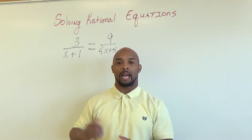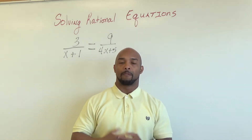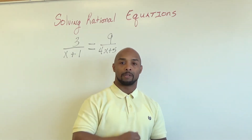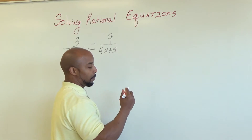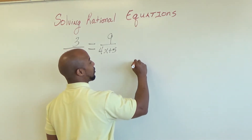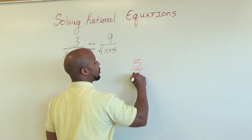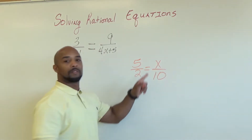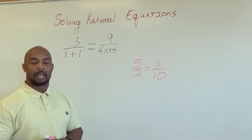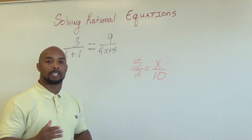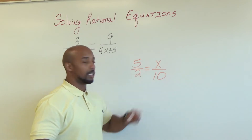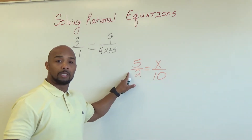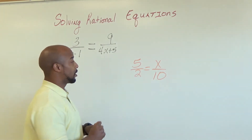So behind me what I have is our first example. Before I do this I want to bring back proportions to the front of your brain. Let's talk about proportions quickly — something like 5 over 2 is equal to some number over 10, and we must find this number. Keep in mind that a proportion is simply two ratios that are set equal to each other. The method we will use to solve a proportion is by using cross multiplication.